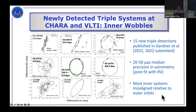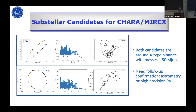Most of the inner systems were found to be misaligned relative to the outer orbits. This could relate to the more massive A and B type stars undergoing more dynamical interactions, or be a selection effect from how orbits were chosen. Regarding the main exoplanet objective, two possible sub-stellar candidates were found from the CHARA array — both around A-type binaries with about 50 Jupiter masses. These need additional astrometry to confirm, as their inner orbits are not as clean as the stellar mass companion detections.